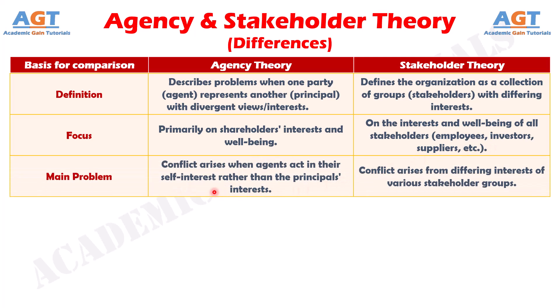Number three: agency theory highlights the risk of agents not aligning with principals' goals, while stakeholder theory addresses the challenge of reconciling diverse stakeholder interests.